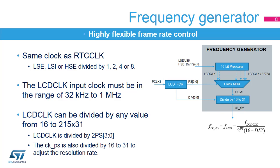The LCD controller features a highly flexible frequency generator. The LCD clock source is the same as the RTC clock, which is either a low-speed external 32.768 kHz oscillator (LSE), a low-speed internal 32 kHz RC oscillator (LSI), or a high-speed external 4 to 48 MHz oscillator (HSE) divided by 1, 2, 4, or 8. The frequency generator allows you to achieve various LCD frame rates, starting from an LCD clock source which can vary from 32 kHz to 1 MHz. The clock source must be stable in order to obtain accurate LCD timing and hence minimize DC voltage offset across LCD segments. The input clock, LCD CLK, can be divided by any value from 16 to 2 to the 15th power times 31. This frequency generator consists of a pre-scaler, 16-bit ripple counter, and a 16 to 31 clock divider.